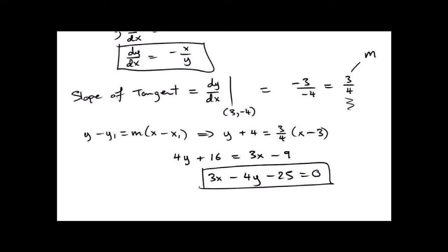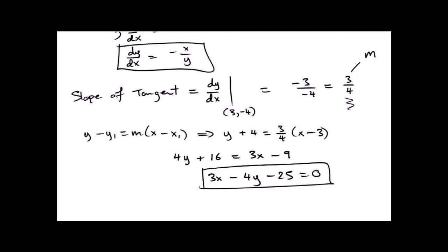That's writing it in standard form ax plus by plus c equals 0, so we'd be ready to use the perpendicular distance formula if we had to. There's an outside chance they could ask you this in the circle chapter and you could use differentiation to do it — no matter how complicated the circle, it'll work. So here's an interesting question with a bit of a twist.